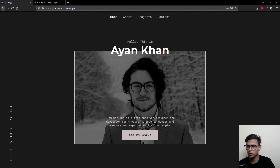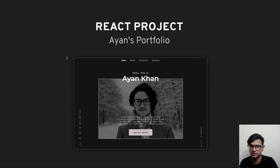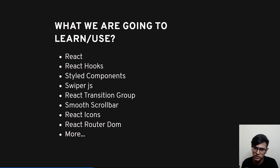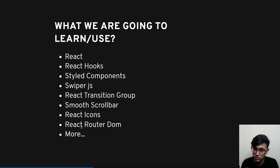That's what we're going to make — the whole project from scratch, building all the pages, and then we'll deploy it. Before we start, let's talk about what we're going to use. This is a React project using React and React Hooks. For CSS, we'll use Styled Components. For one carousel, we'll use Swiper.js. For another carousel and transitions, we'll use React Transition Group. For smooth scroll, we'll use Smooth Scrollbar. For icons, React Icons. For routing, React Router DOM — plus many other things we'll discover during the project.